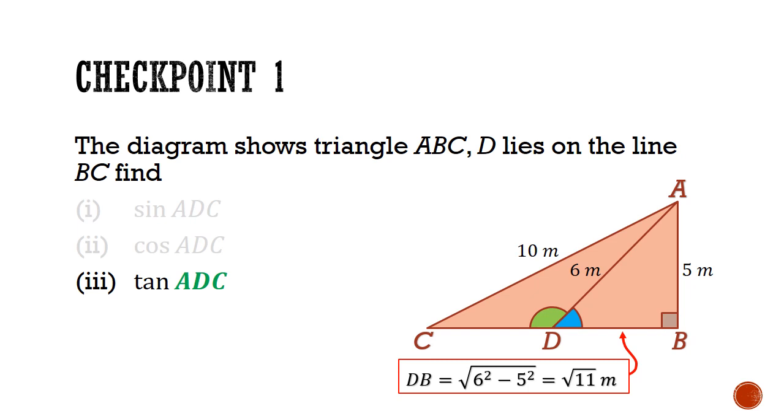Lastly, in part 3, tangent of the obtuse angle ADC is equals to negative tangent of the acute counterpart ADB. And this will give us negative 5 over root 11.